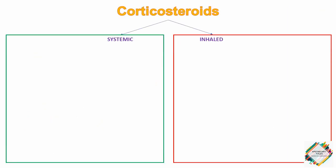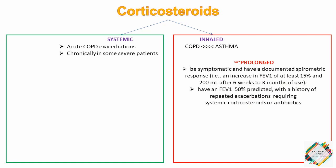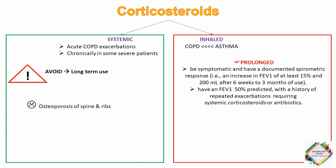Corticosteroids include both systemic and inhaled forms. Systemic corticosteroids (preferably oral) are indicated in the treatment of acute COPD exacerbations, and chronically in some severe patients. Inhaled corticosteroids play a less important role in COPD than in asthma. Candidates for prolonged inhaled corticosteroid use should be symptomatic, have a documented spirometric response, and have an FEV1 less than 50% predicted with a history of repeated exacerbations requiring systemic corticosteroids or antibiotics. Long-term use of systemic steroids should be avoided if possible, and inhaled steroids have been recognized to increase the risk of bacterial pneumonia in COPD patients.